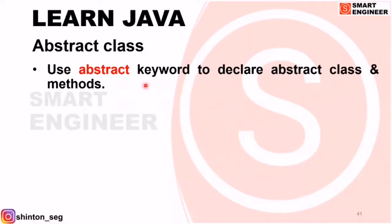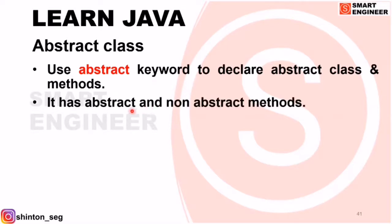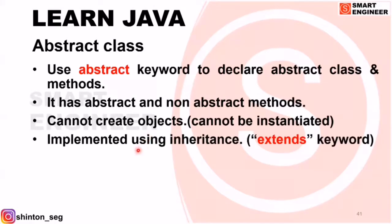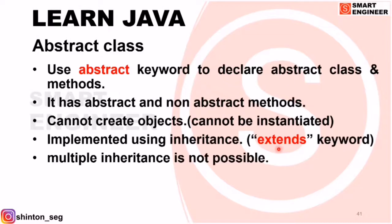In summary: in an abstract class, you need to use the keyword abstract to declare both the abstract class and its methods. Inside an abstract class, you can write both abstract and non-abstract methods. You cannot create an object from an abstract class — it cannot be instantiated. To implement abstract methods, use inheritance by creating a child class with the keyword extends.